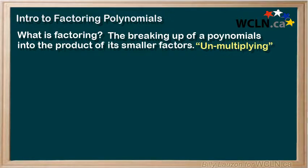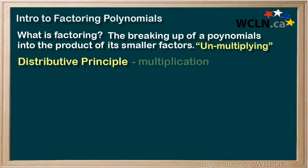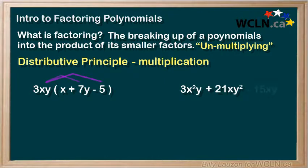In earlier chapters, we've used the distributive principle to multiply through such expressions like 3xy times x plus 7y minus 5, where we distribute the 3xy through the three terms. This gives us 3x squared y plus 21xy squared minus 15xy on the right-hand side. This is an act of multiplying.